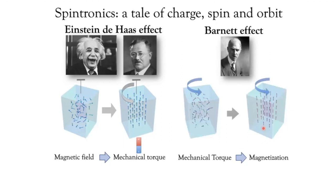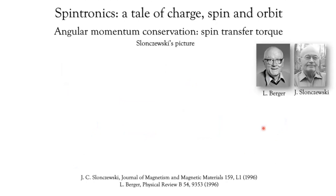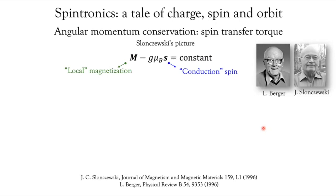This equivalence really shows that magnetism has to do with angular momentum, and this is very important to keep in mind especially when we start talking about spin-orbit coupling, because it's really about harvesting the orbital degree of freedom and transferring it to the spin. One of the most beautiful demonstrations of angular momentum conservation is the spin transfer torque, proposed by Luc Berger and John Slonczewski. I'll talk about Slonczewski's picture: you take a metallic magnet — the total angular momentum should be conserved — and because magnetism has two contributions, the local magnetization and the contribution from the conduction spin, the sum of both should be a constant.